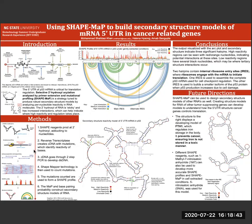Reverse transcriptase and two-step PCR are used to create double-stranded DNA with the mutations caused by the shape reagent. ShapeMapper software is then used to count these mutations and create a shape profile. This mutational profiling along with base pairing probability software are used to build secondary structure models of RNA.